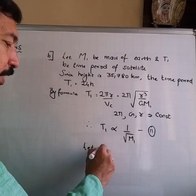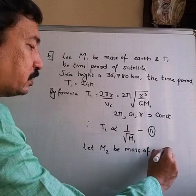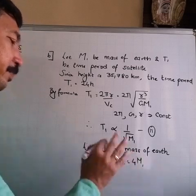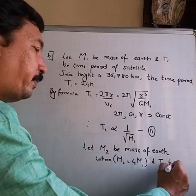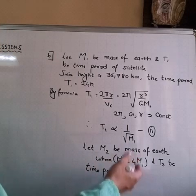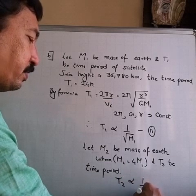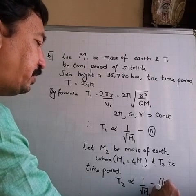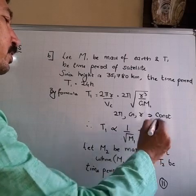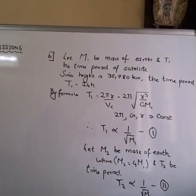Now let M2 be the new mass of Earth, where M2 is 4 times M1 as given, and T2 be the new time period which we have to find. Similarly, T2 is inversely proportional to 1 upon square root of M2. This is equation 1 for T1 and equation 2 for T2.